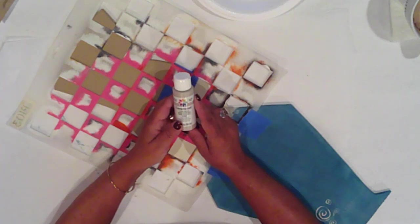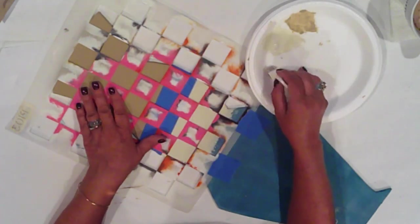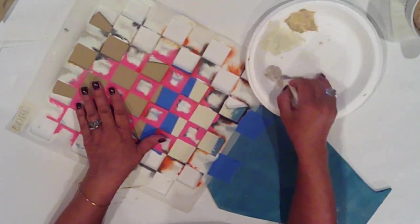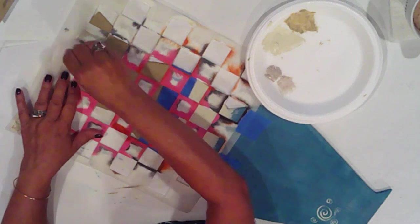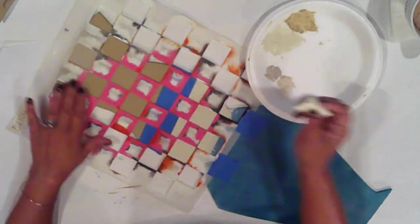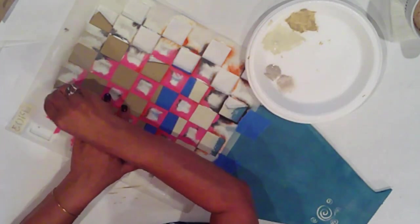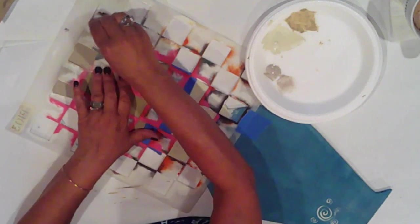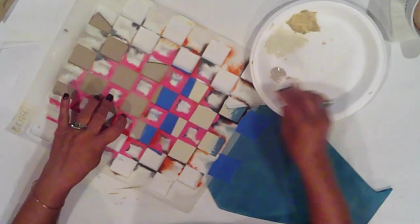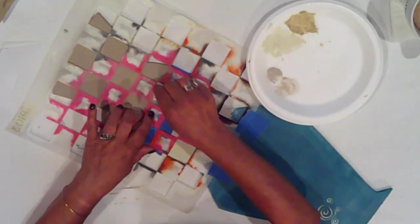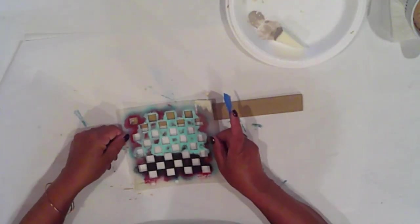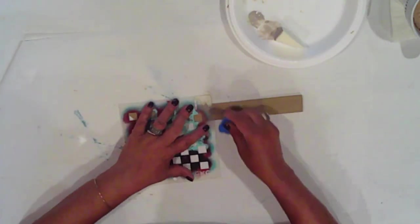I'm using Ceram Coat Sand Dune, which I'll pounce on with a cosmetic sponge. I'll use a smaller version of the stencil on the brim.